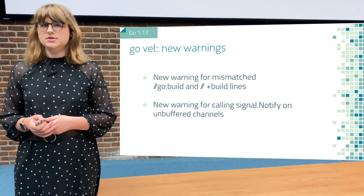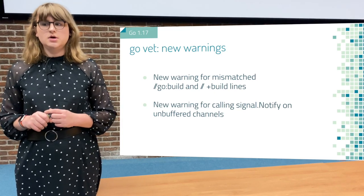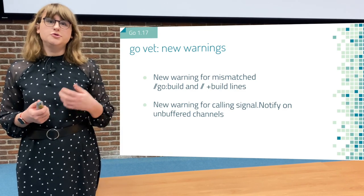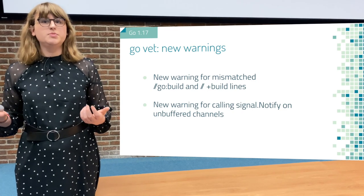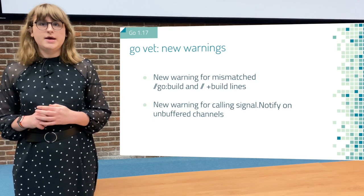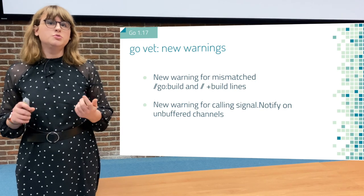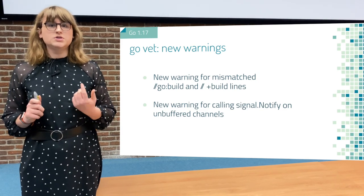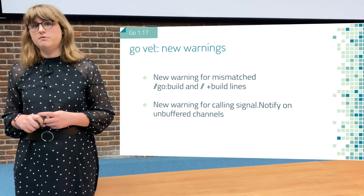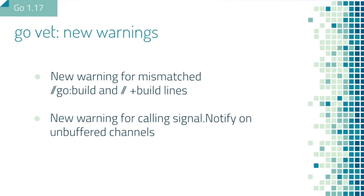Next up are new warnings to GoVet. These can be important to you because they might break your tests. There are two new warnings in Go 1.17. The first is that it will now warn you when your go:build line and your //go:build line arguments are no longer matching. We also have a new warning for when you use SignalNotify on an unbuffered channel for OS signals. Because this can go wrong quite badly, GoVet will now warn you against doing that.